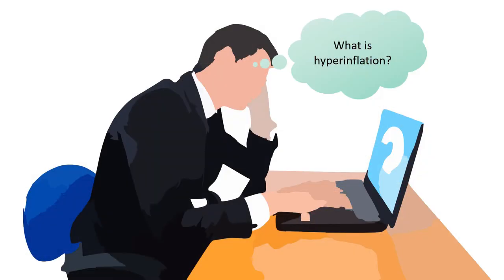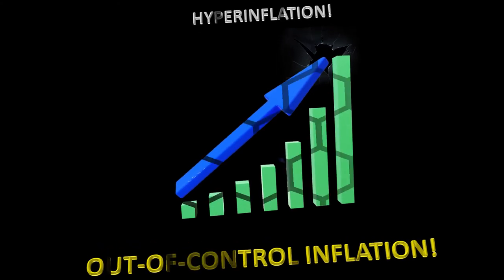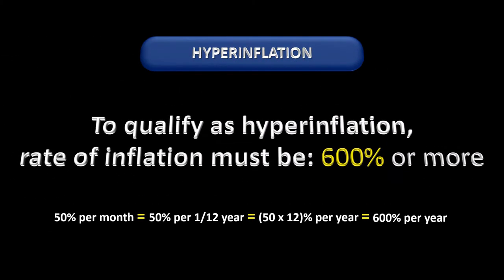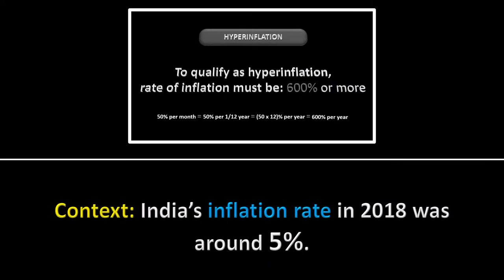So first, we must ask ourselves a basic question: what is hyperinflation? As the word tells us, hyperinflation is a term used to describe out-of-control general price increase, or simply out-of-control inflation. Normal inflation can be distinguished from hyperinflation by the fact that hyperinflation is an inflation rate of 50% every month, which translates to an inflation rate of 600% per year. For a bit of context, India had an inflation rate of 5% in 2018.